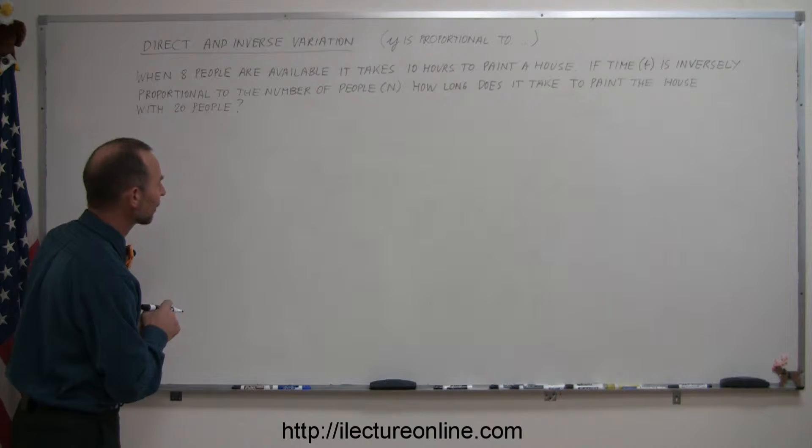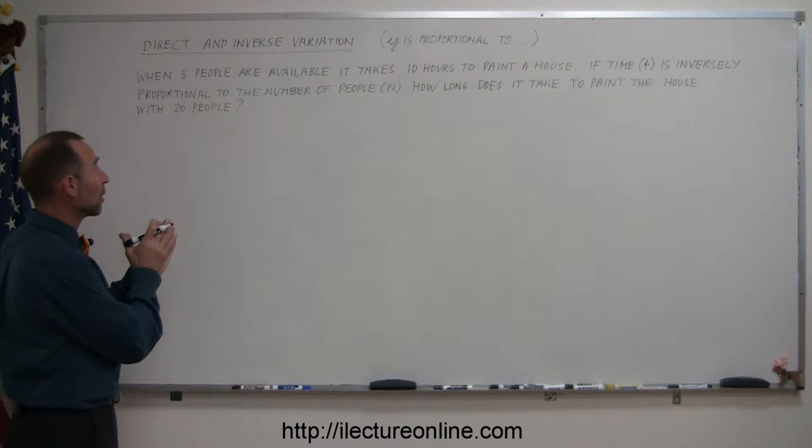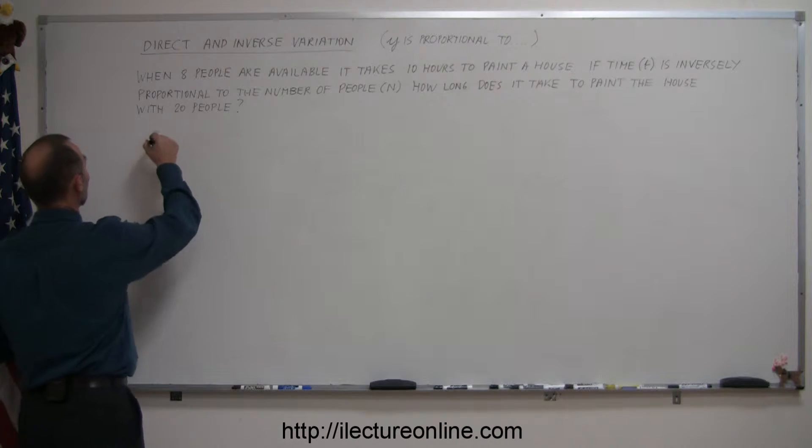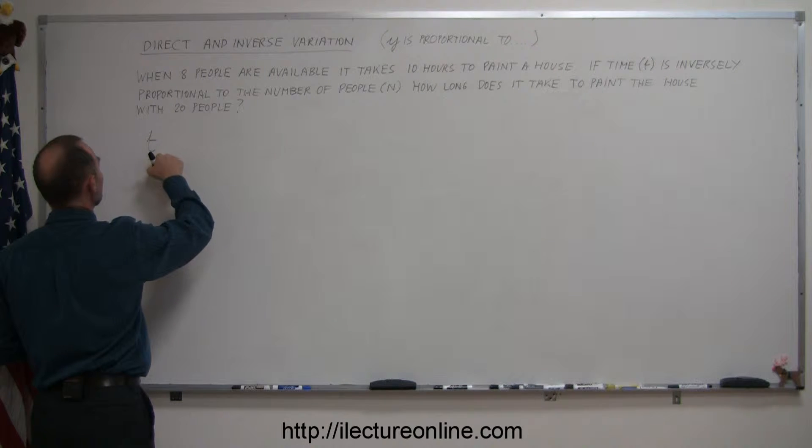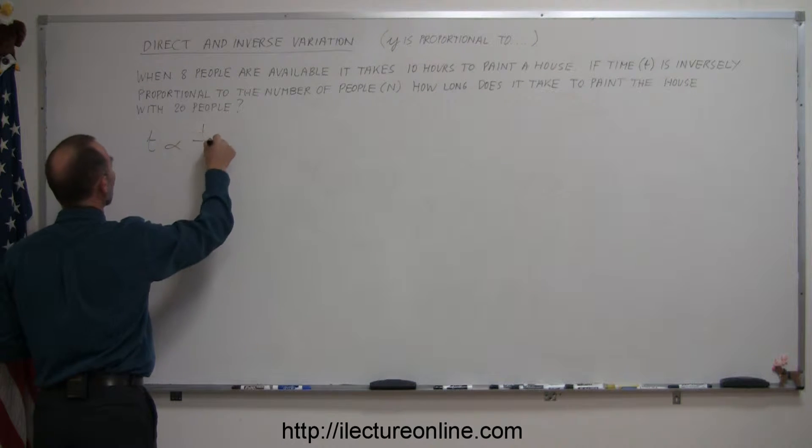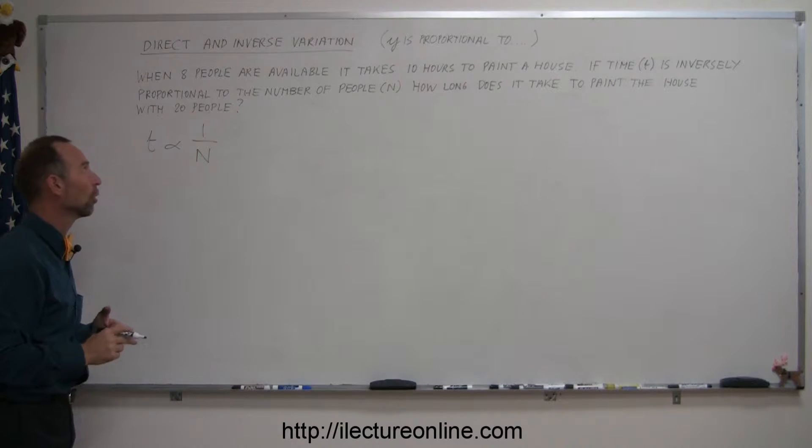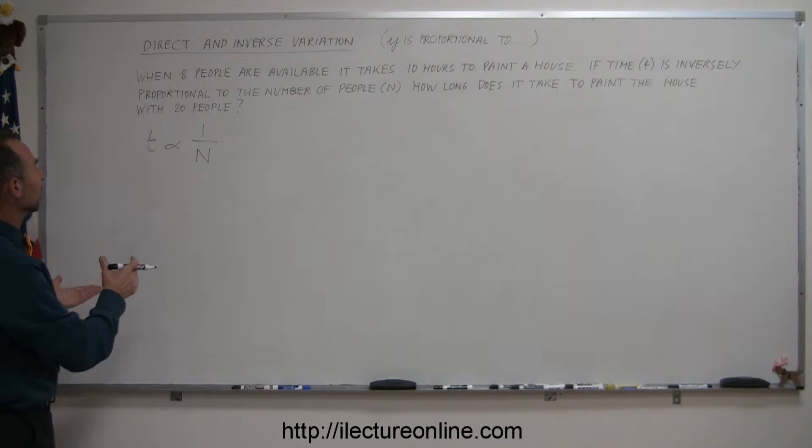Let's see if we can figure this out. So first what we want to do is write down the proportionality. The time that it takes to paint is proportional to 1 over the number of people. So that's what we mean by it's inversely proportional or it varies inversely to the number n, the number of people n.